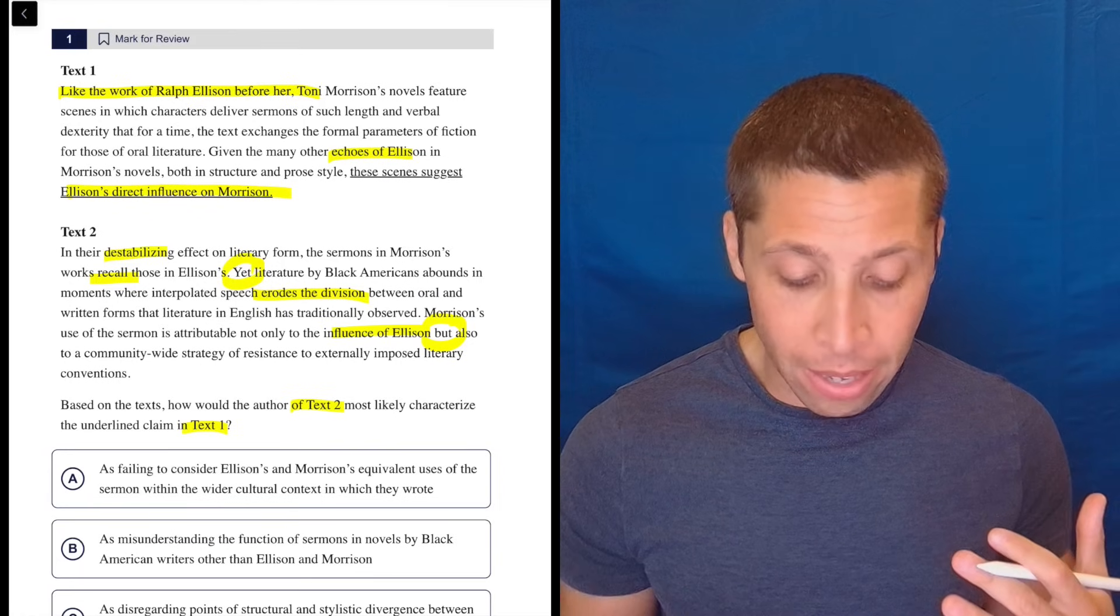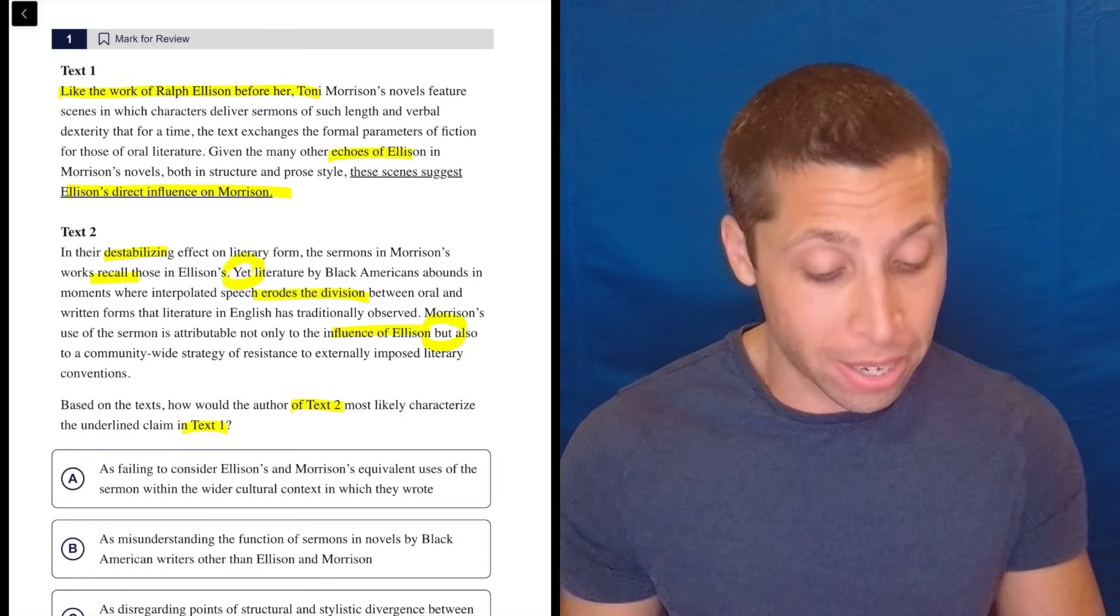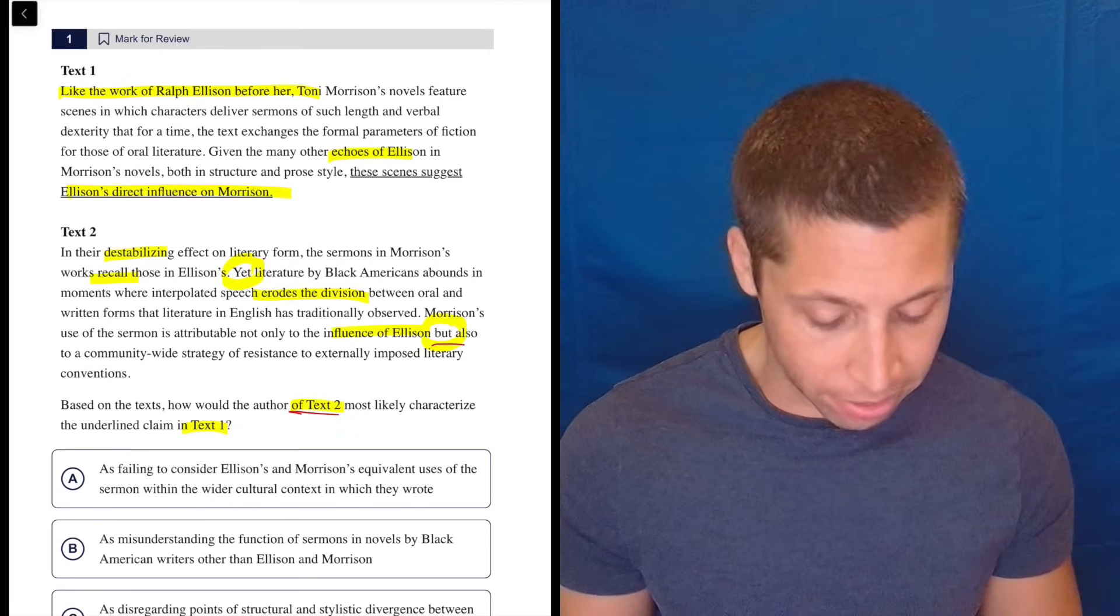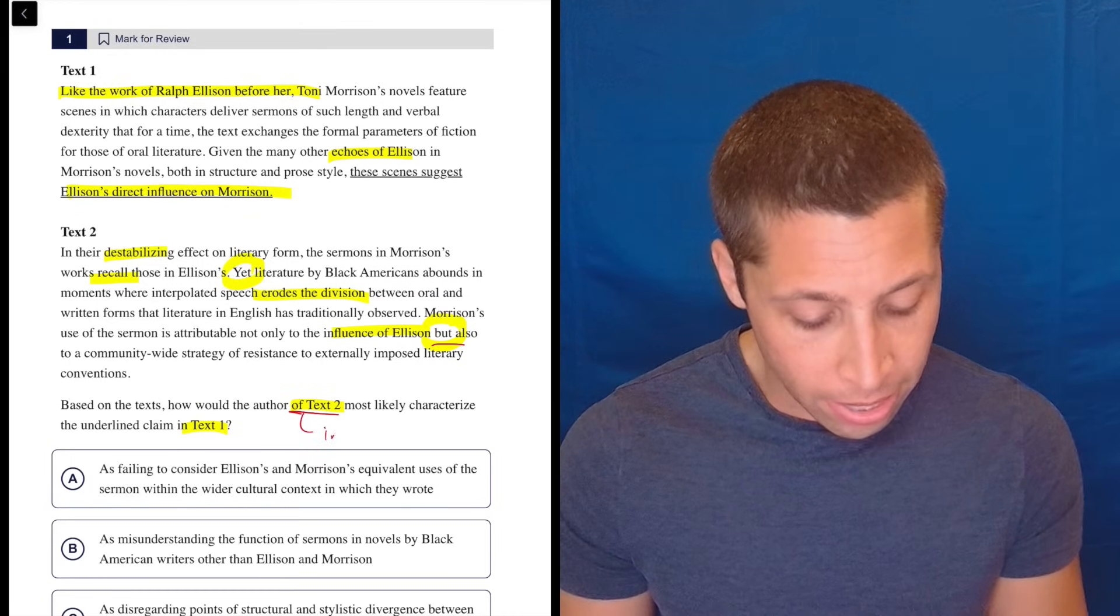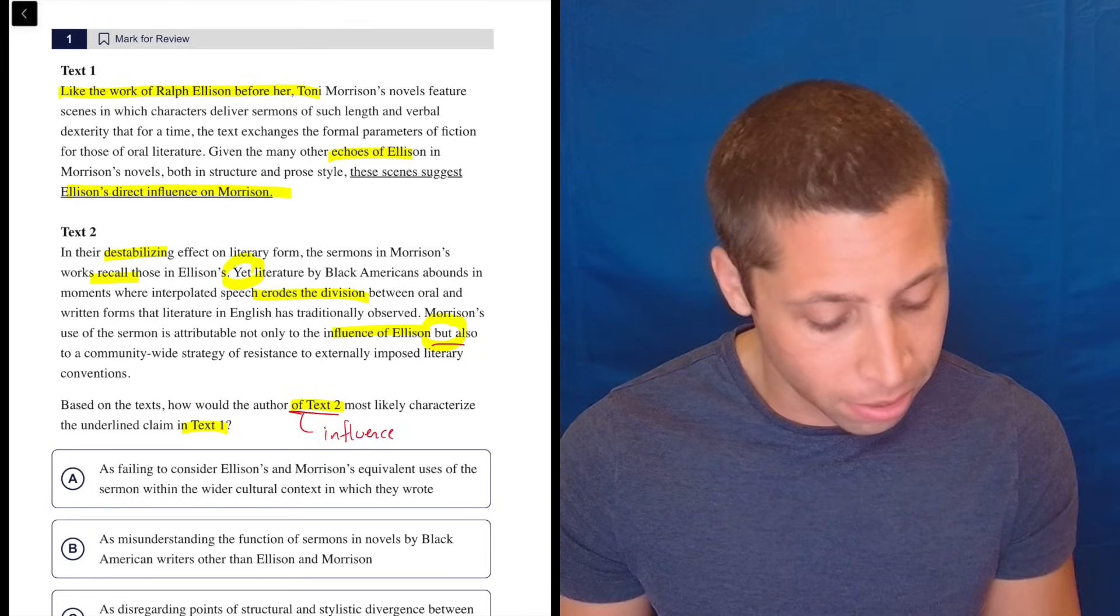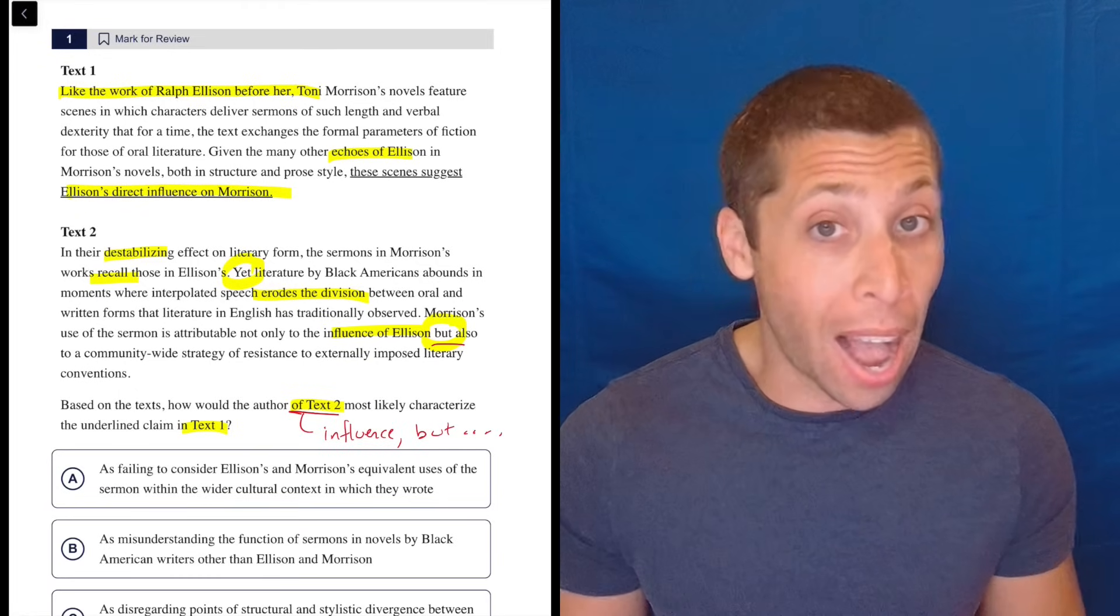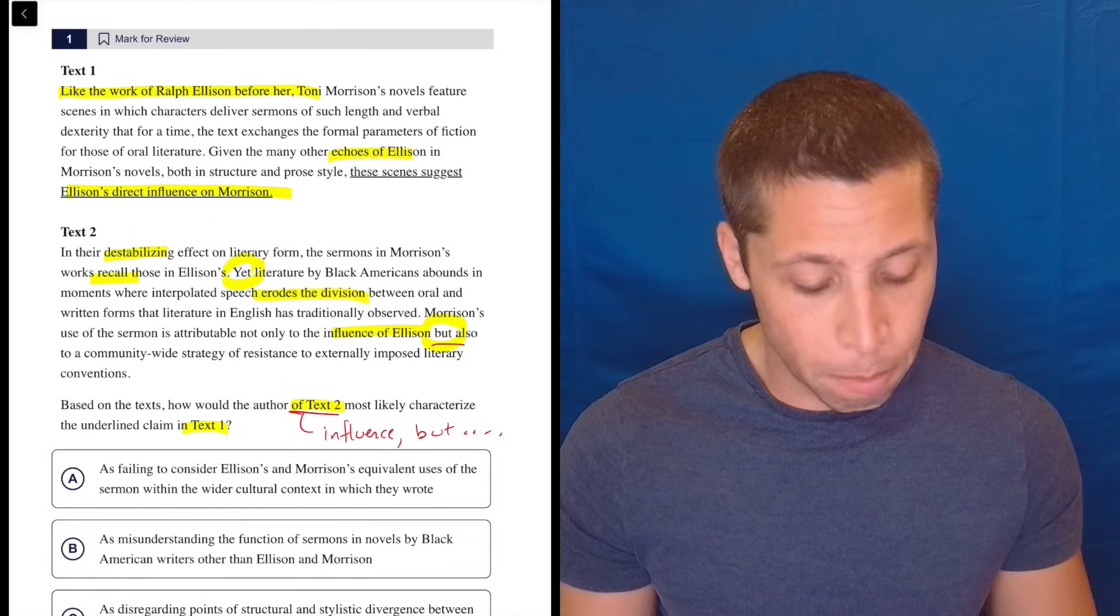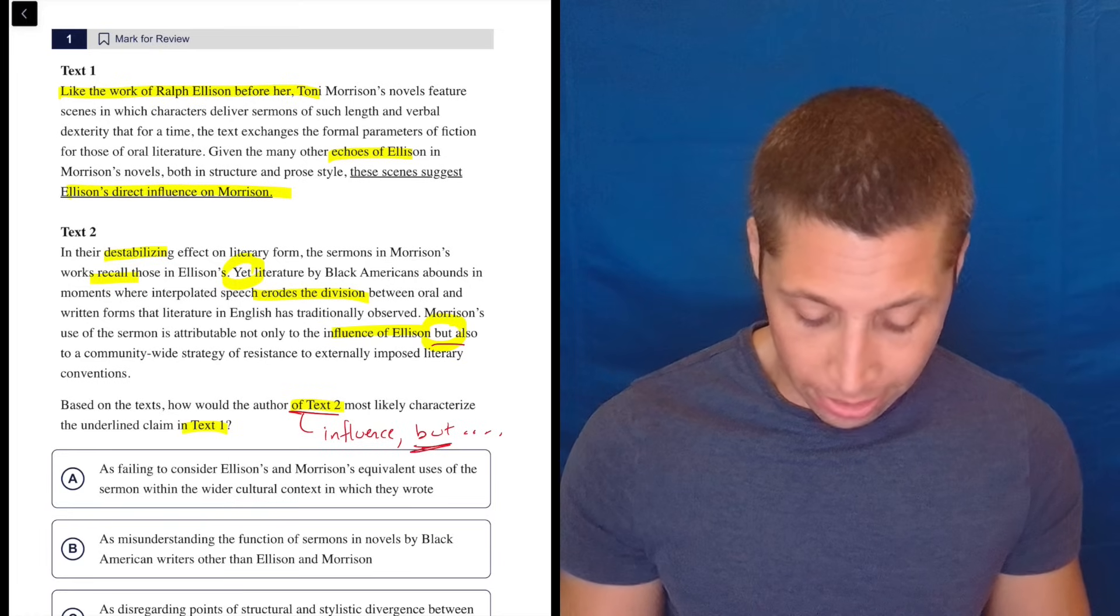Text two seems to be saying that, but with a but involved. So I don't understand the but, but I'm pretty sure it's going to be important. So my summary here, my dumb summary, as dumb as it can be, is that text two is going to say about text one, yes, there's influence, but there's also something else. I don't understand the something else. Hopefully the choices will help me understand it. But honestly, the but is more important here than anything else. So let's take a look.